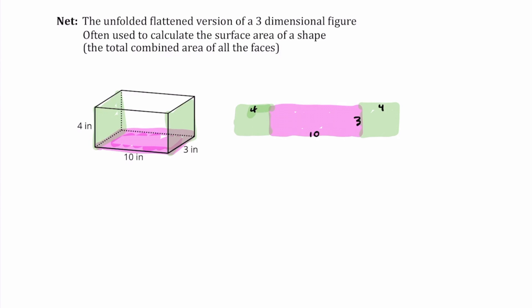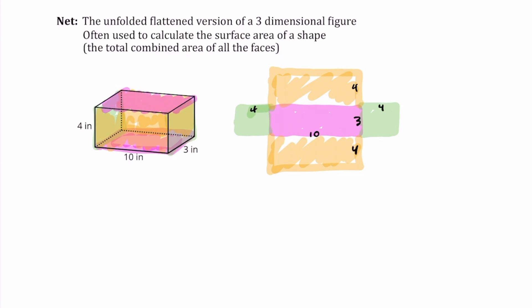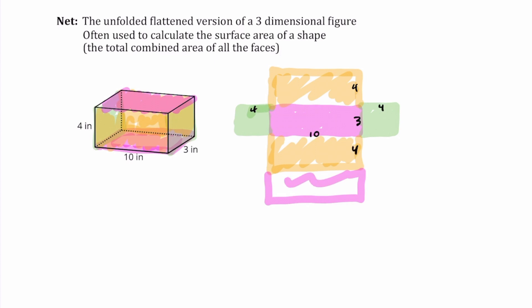Then we've got the front and the back, so we'll draw those — one here and another on the other side. That leaves us with five shapes, but we should have six faces for a rectangular prism. The last one is the matching side to the base, since there are two bases. You could draw it on top or on the bottom — basically, you just want it so that if you fold it up together, it would make that same shape.